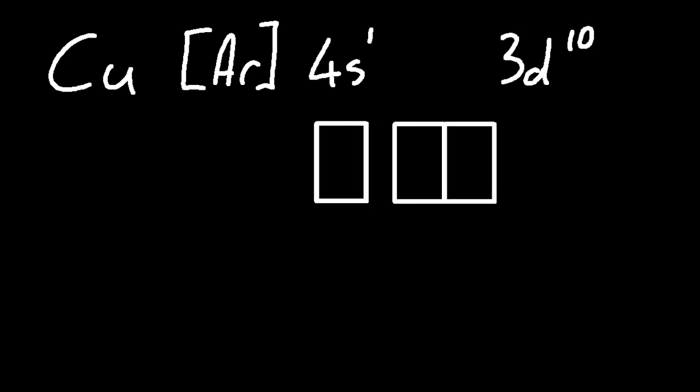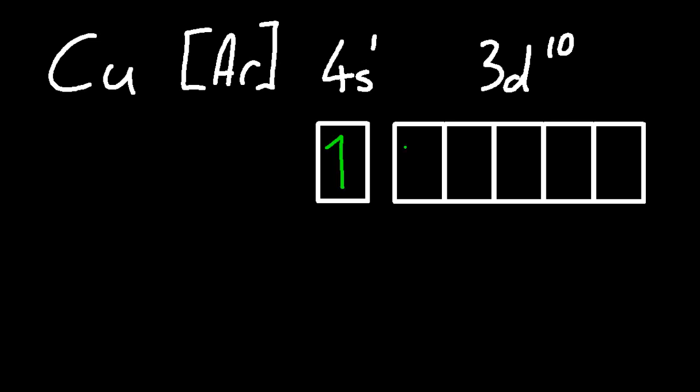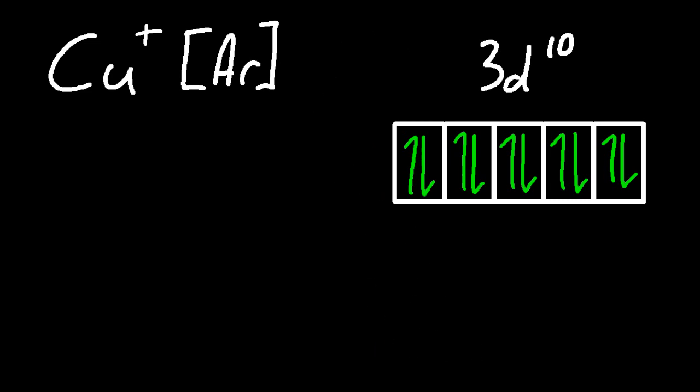So copper, that has two oxidation states, plus one and plus two. Now don't forget copper's the weird one, just like with chromium. So copper one plus, it's going to lose that lone electron. That's pretty stable.